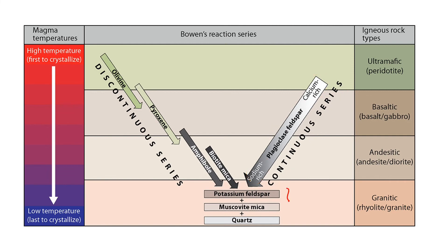The bottom of the series contains the minerals that end up having the higher silica content and will be the last to crystallize, as silica has the lowest melting point. So as the magma cools, potassium feldspar will crystallize, then muscovite mica, then quartz.